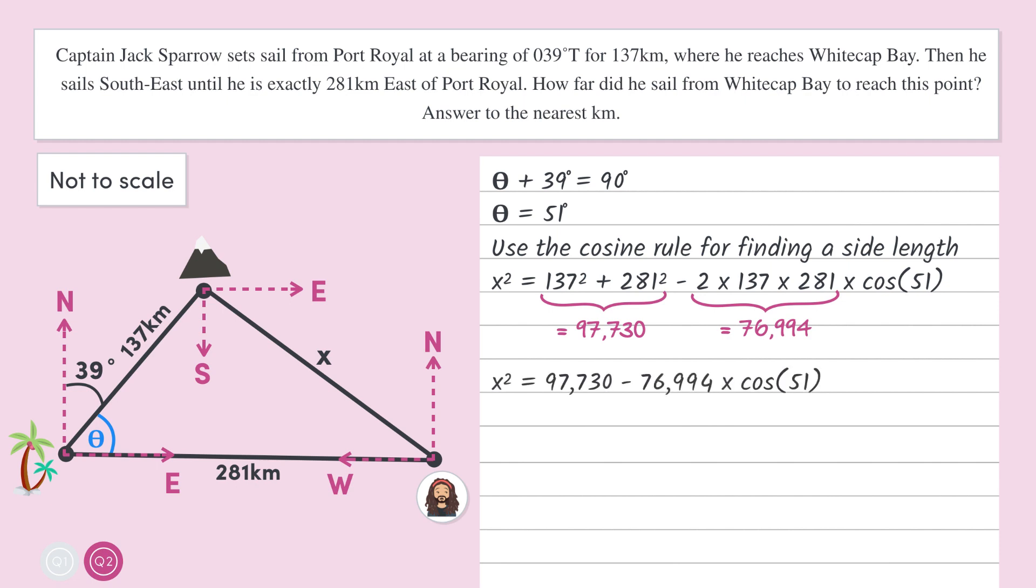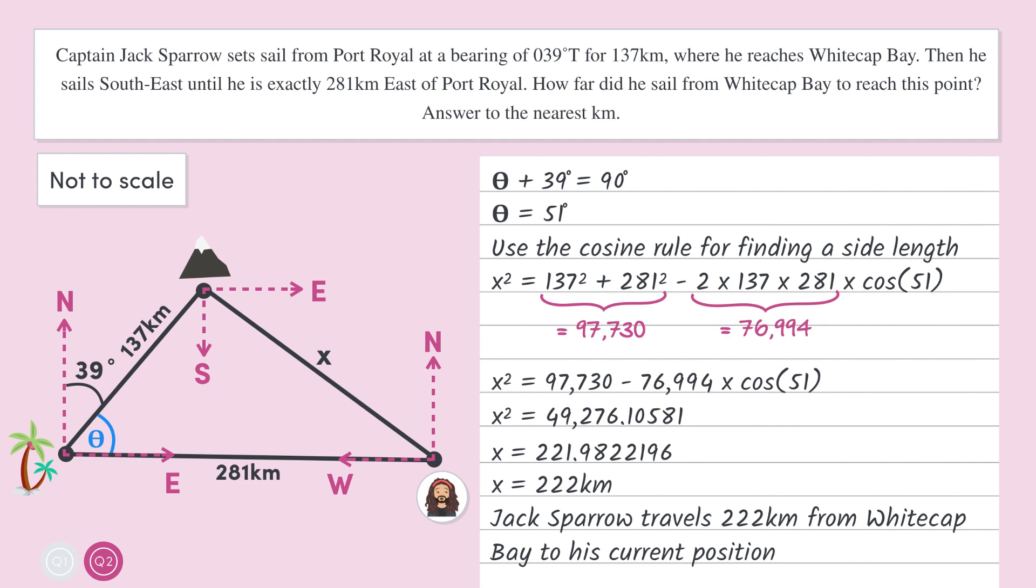Now using our calculators, the right hand side simplifies to 49,276.10581. Taking the square root to get x as a subject leaves us with x equals 221.9822196. Then we'll round this up to 222 so our answer is to the nearest kilometre. Therefore, Captain Jack Sparrow has to travel 222 kilometres south-east from Whitecap Bay to his current position.